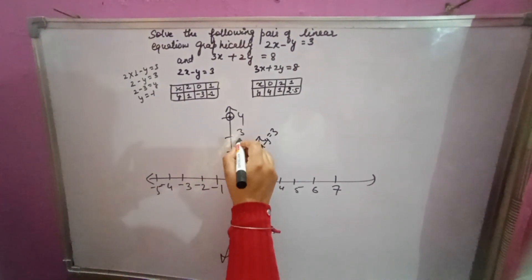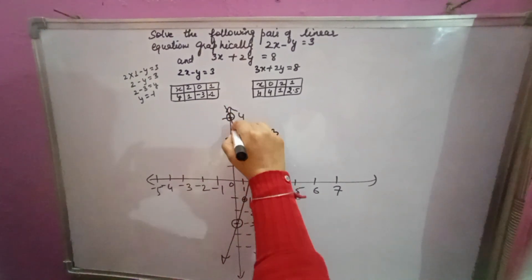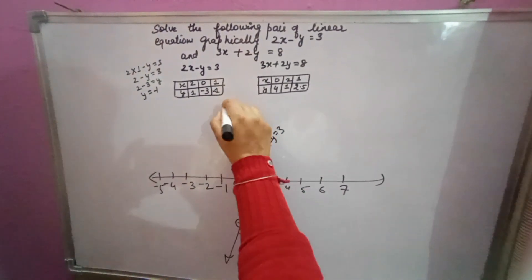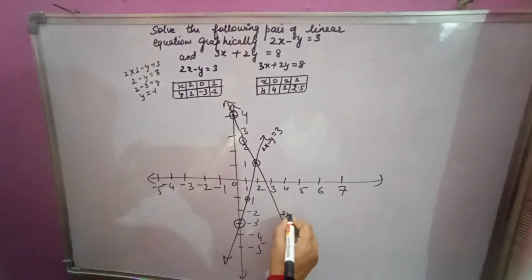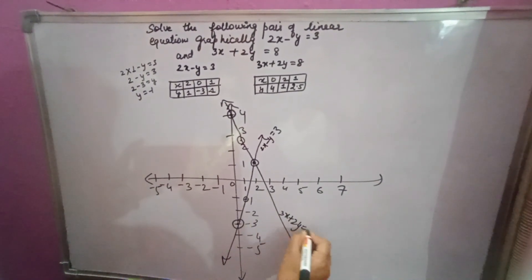So here it will come approximately between 2 and 3. Now with the help of a scale you have to join it carefully. And here you write the equation 3x plus 2y equals 8. Second equation.